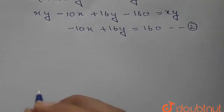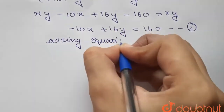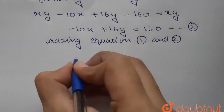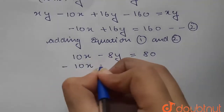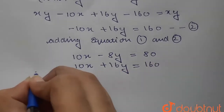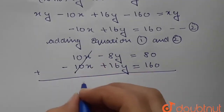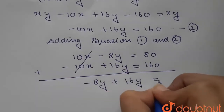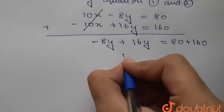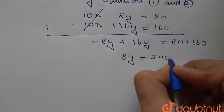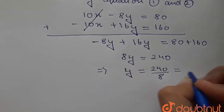Adding Equation 1 and Equation 2: 10x minus 8y equals 80, plus minus 10x plus 16y equals 160. The 10x and minus 10x cancel. We get 8y equals 240, so y equals 240 divided by 8, which equals 30.